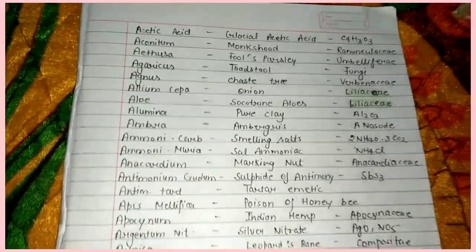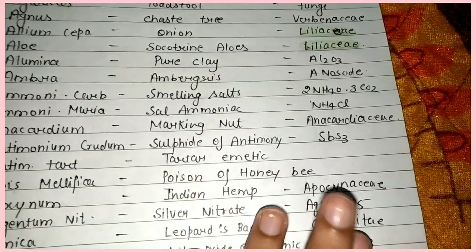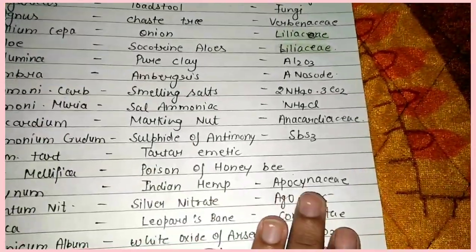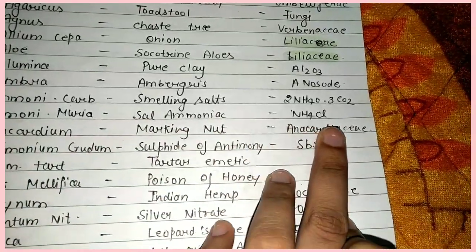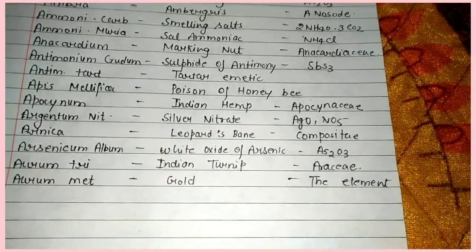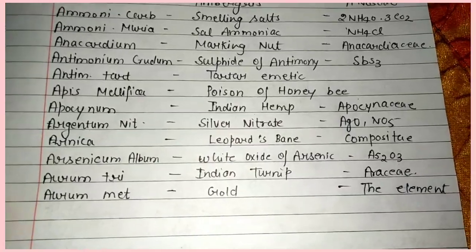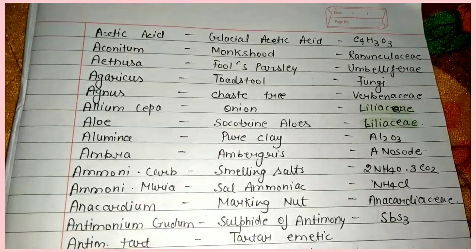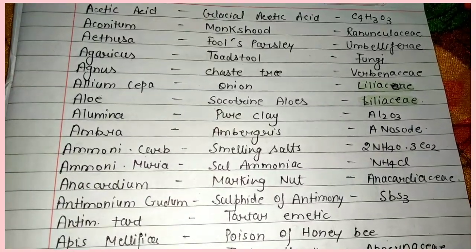So these are all the medicines starting with A that I have discussed today — their common names and families. There are many medicines which we can easily remember. Like Anacardium — its family Anacardiaceae is easy to remember. You mainly have families like Liliaceae and Ranunculaceae to remember. So guys, this is all about today's video. If you like this video, please share it in your groups. Thank you so much for your love and support.